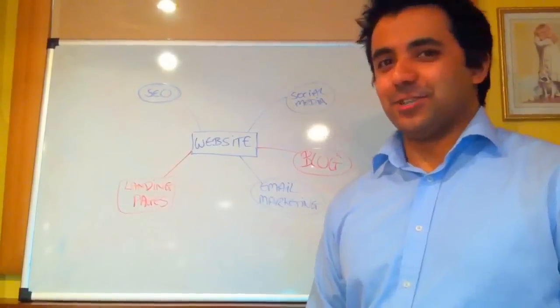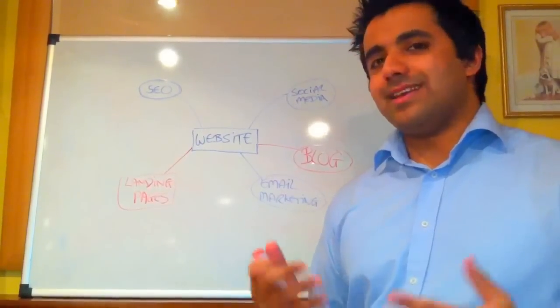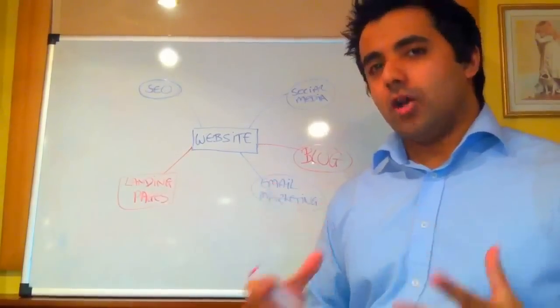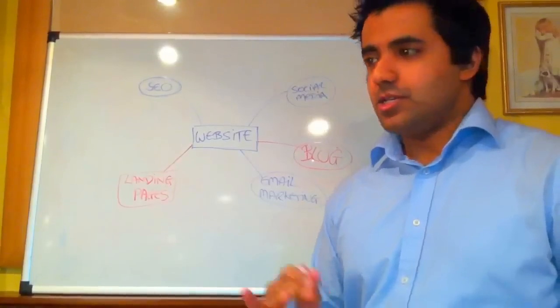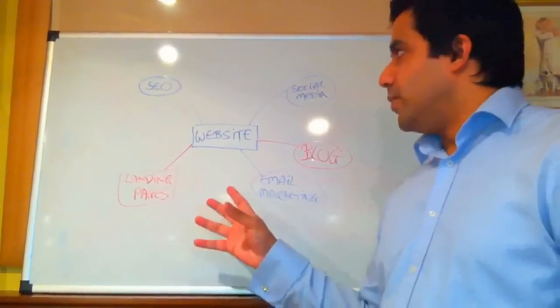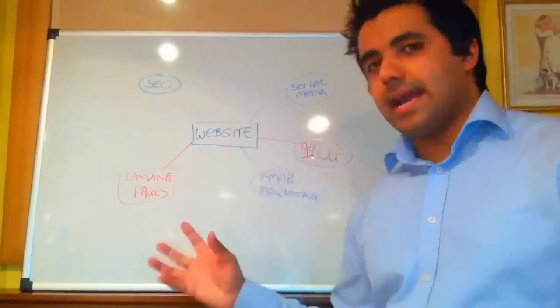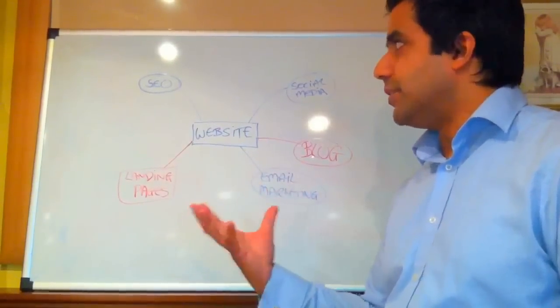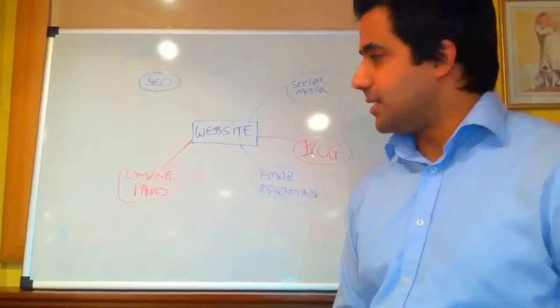Hey sports fans, Haroon Rashid, Finisher Creative. Today we're going to talk about the anatomy of a basic online marketing strategy. As you can see here, we've listed a few main categories of tools or techniques that you can use in your online marketing strategy.